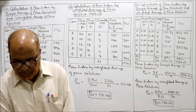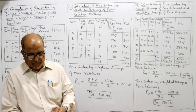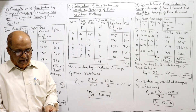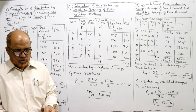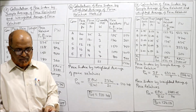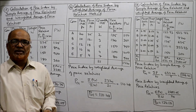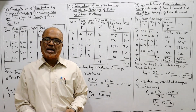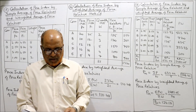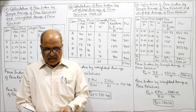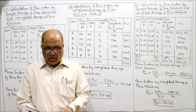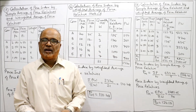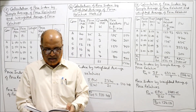Now problem number 17: the price quotations of 5 commodities are given below. Calculate the index number of the current year using simple average of price relatives and weighted average of price relatives. Commodities are A, B, C, D, E with weights 4, 6, 5, 3, 2. Prices in 2003 and prices in 2002 are given. So 2002 prices are the base year and 2003 are the current year prices. This type of problem is frequently asked in examinations.